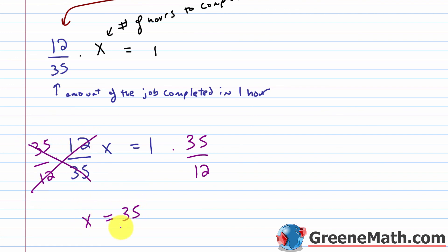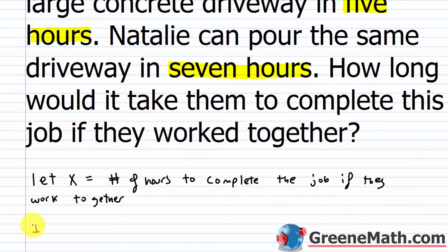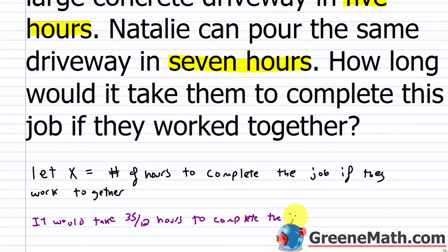So how long would it take for them to complete the job working together? It would take 35/12 hours. Doing the division gives approximately 2.917, or about 2.92 hours. But for exactness on a test, you'd write 35/12 hours.